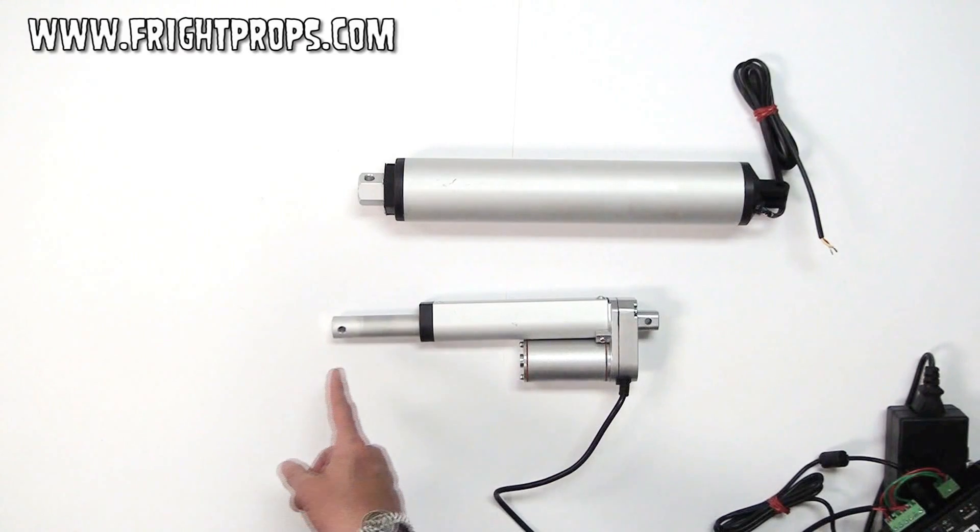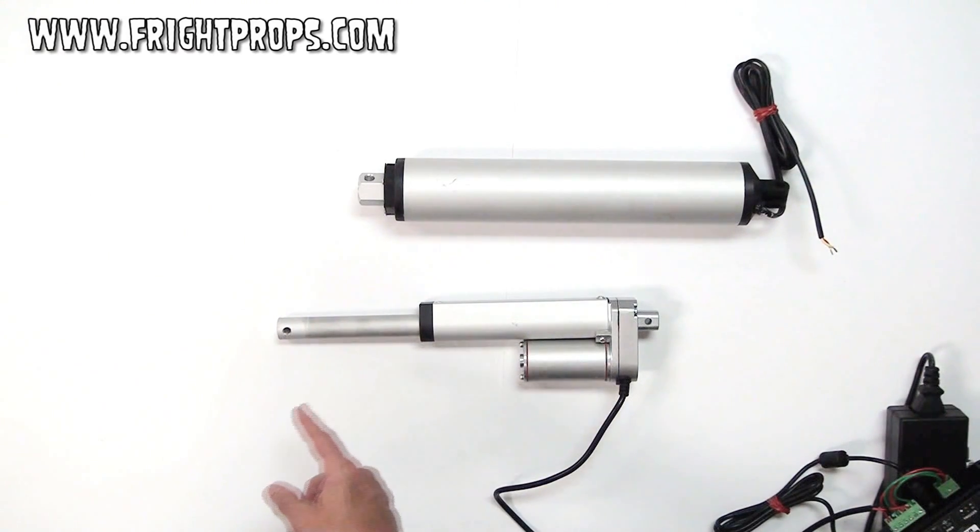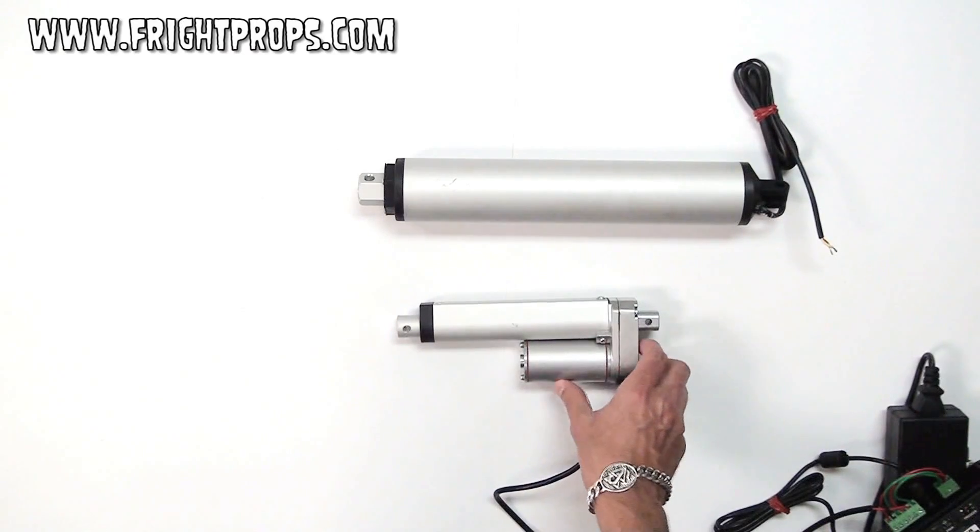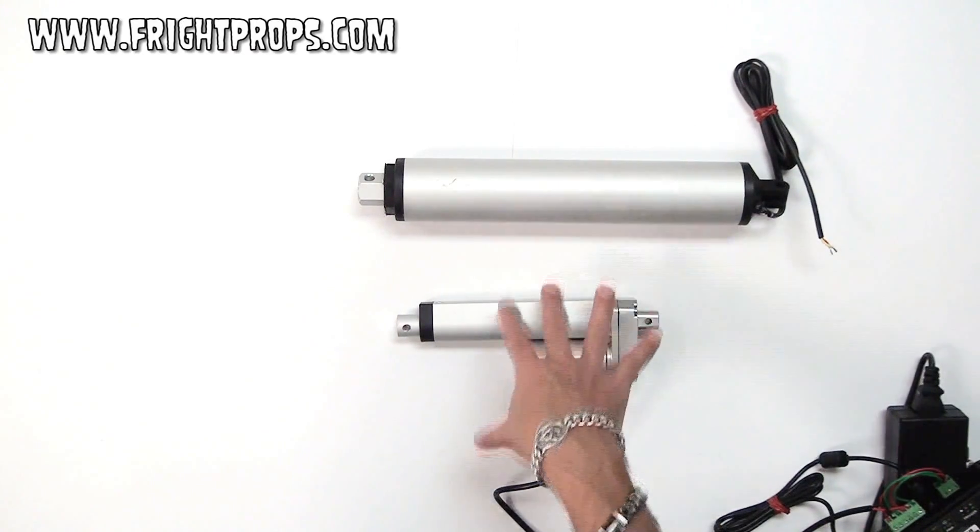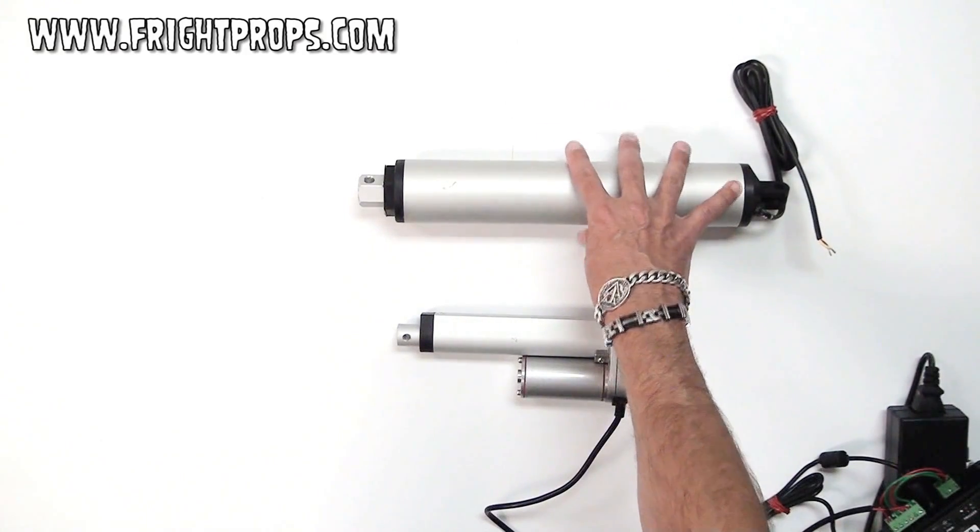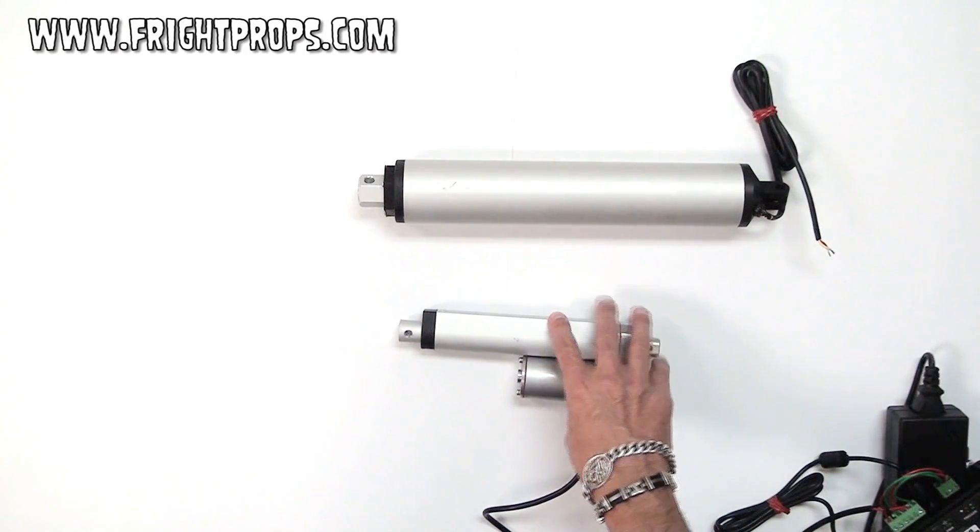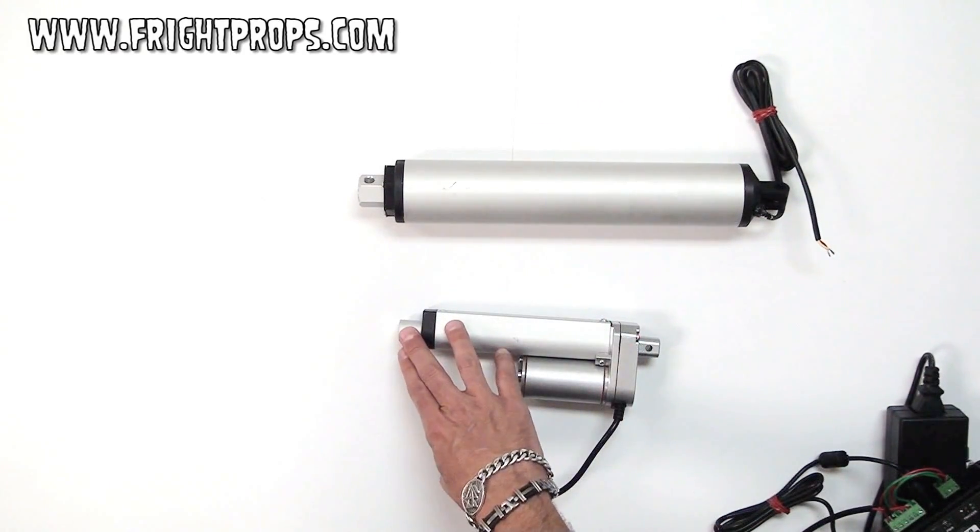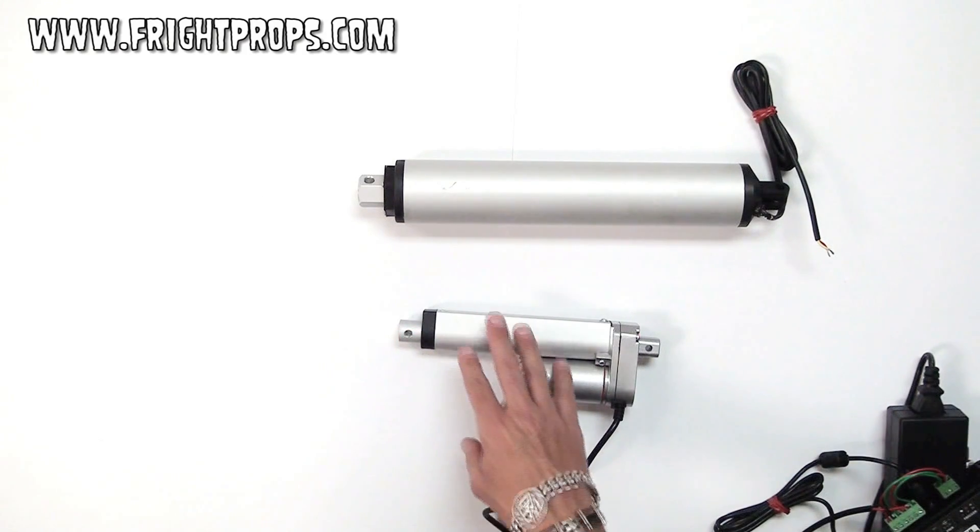The faster that the shaft moves, the less force it's able to exert. This speed is actually dictated by the internal motor and can't be changed, so we offer two different actuators, our standard speed and our high speed. The standard speed has a force of seventy pounds and moves the shaft one inch per second.